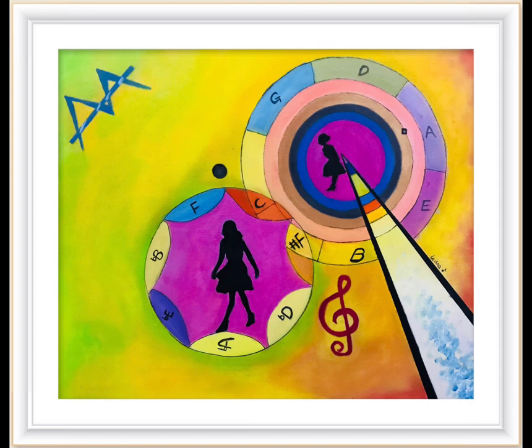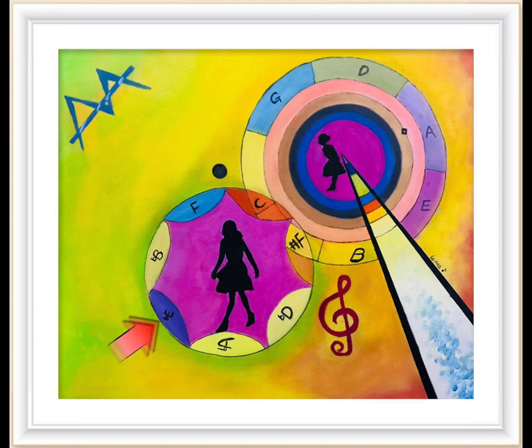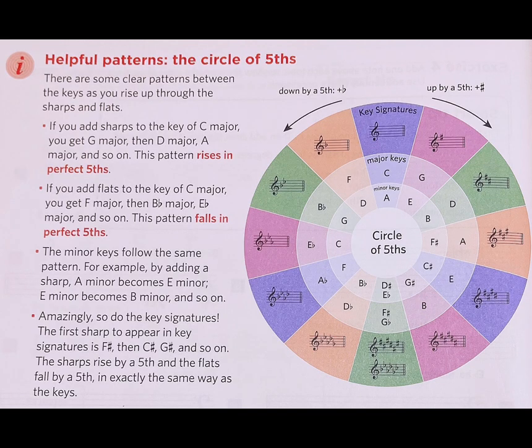This pattern rises in perfect fifths. If you add flats to the key of C major, you get A major, B flat major, E flat major, A flat major, D flat major, G flat major, and so on. This pattern falls in perfect fifths.